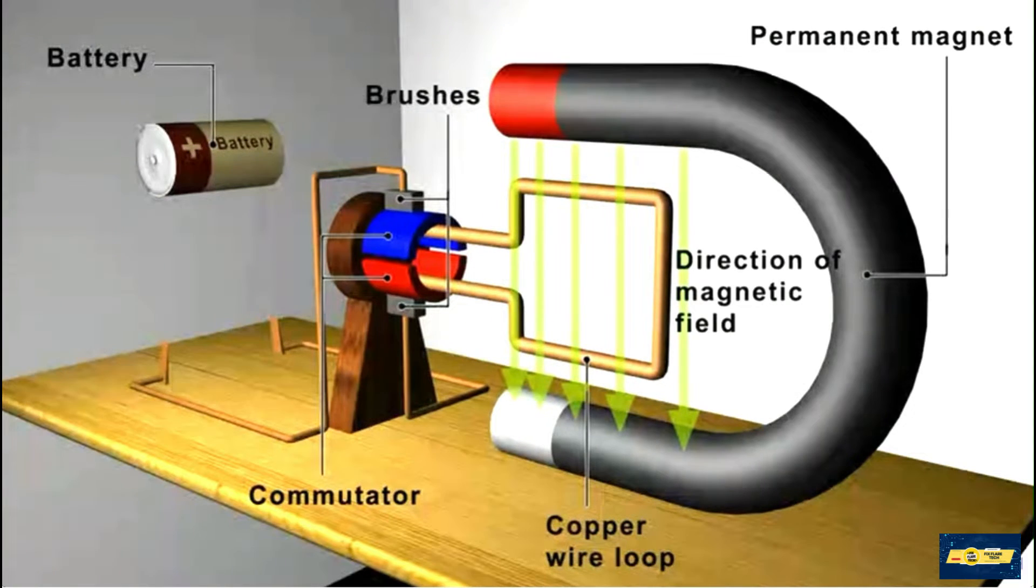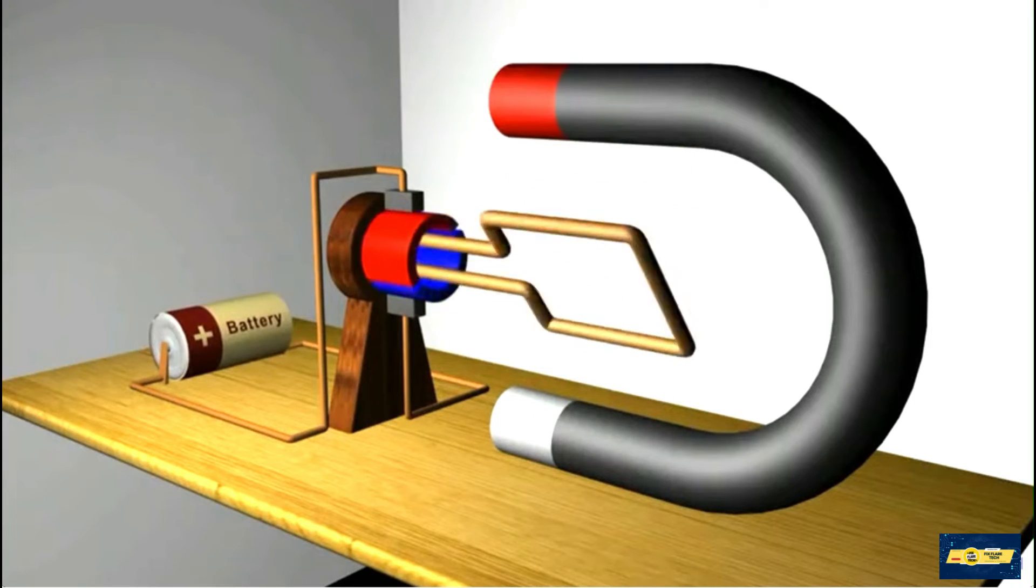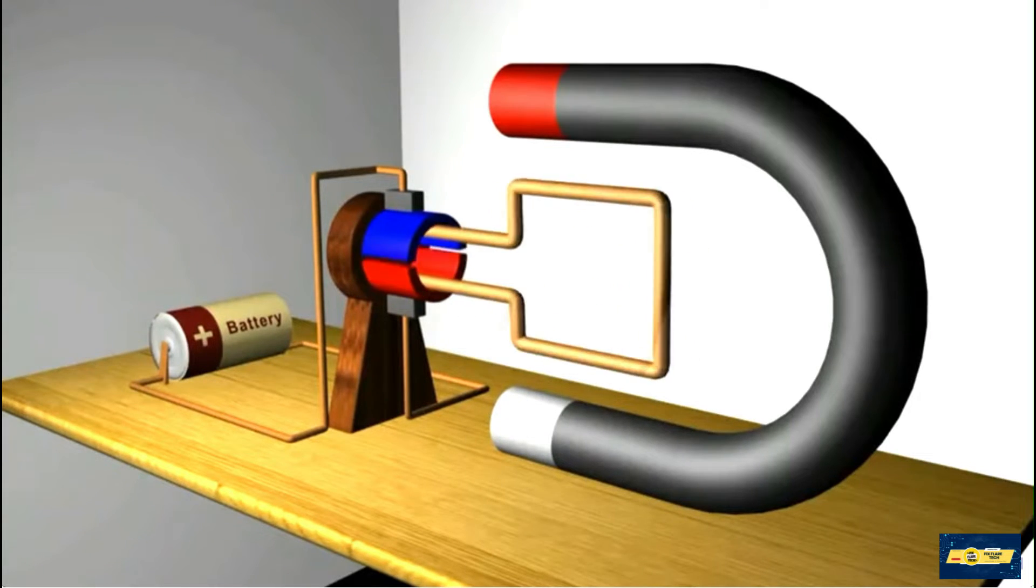Now, when we pass current through the circuit, this creates a magnetic field around the wire which interacts with the field of the permanent magnet to produce a rotation of the loop. That looks like this.